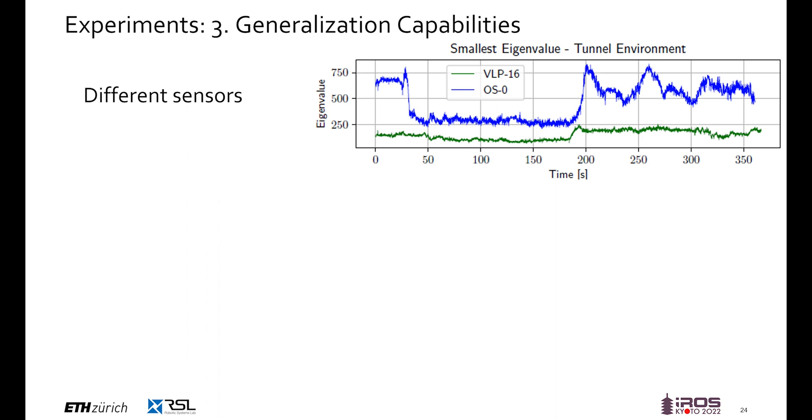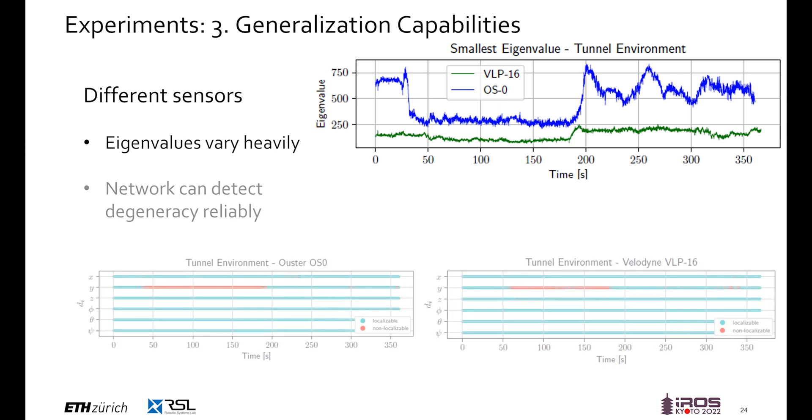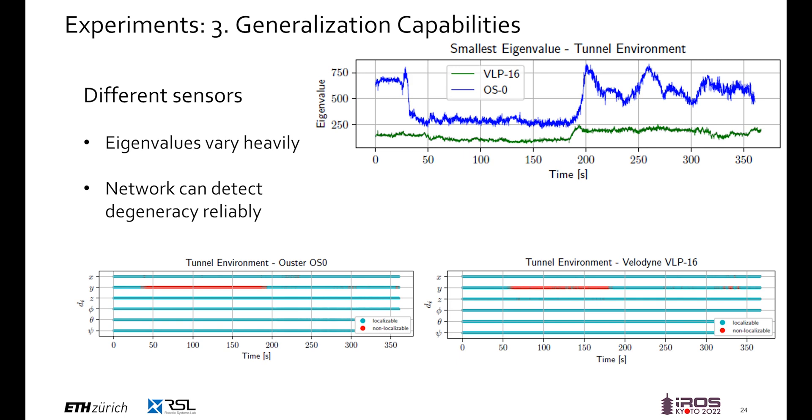In the last experiment, we compute the eigenvalues in the tunnel environment for two different LiDAR sensors, the Velodyne VLP16 from before and the Ouster OS0128. Although the eigenvalues of the two LiDARs differ significantly in scale, the network can estimate the localizability reliably. Note that during training, only a Velodyne VLP16 model was used in simulation for the entire data collection.